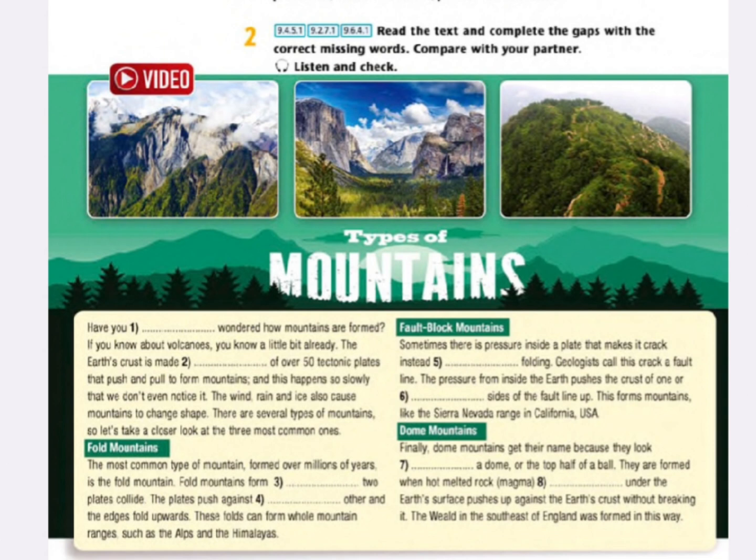Sometimes there is pressure inside a plate that makes it crack instead of folding. Geologists call this crack a fault line. The pressure from inside the Earth pushes the crust on one or more sides of the fault line up. This forms fault block mountains, such as the Sierra Nevada range in the USA.